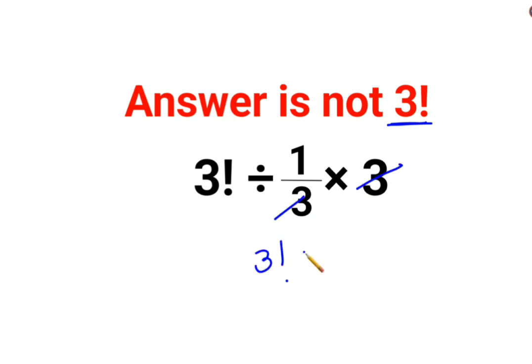So basically you are getting 3 factorial divided by 1. Answer comes out to be 3 factorial. Now that is absolutely incorrect. Why is it incorrect?